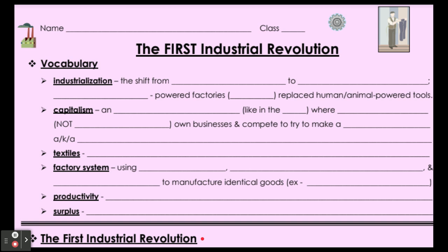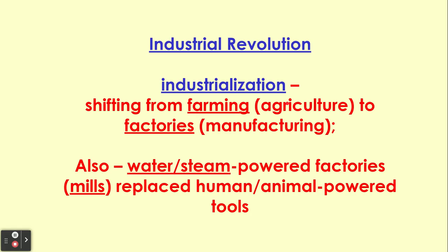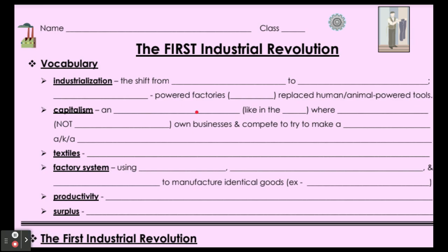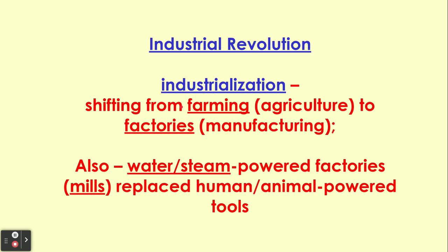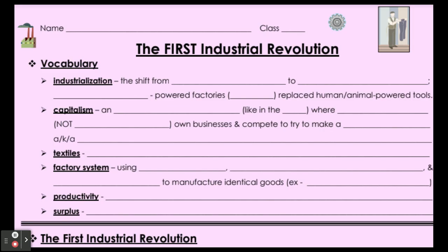Industrialization is kind of a synonym for the Industrial Revolution. This is just the process of changing — the shift from farming or agriculture to factories. Farming to factories has a nice ring to it. Our economy shifts from when everyone was a farmer to more and more people working in factories. During this time period, water/steam powered factories — often called mills — begin to replace human and animal powered tools. First water, then steam.